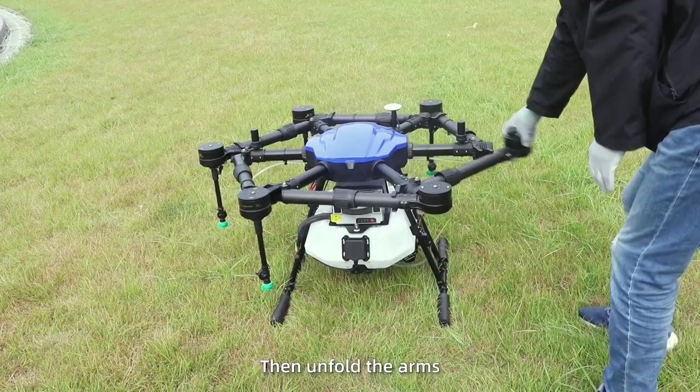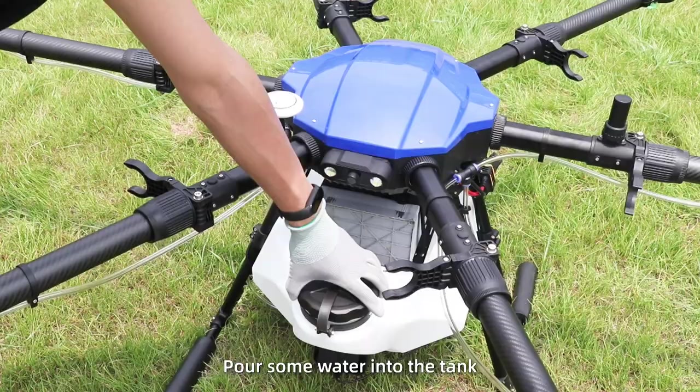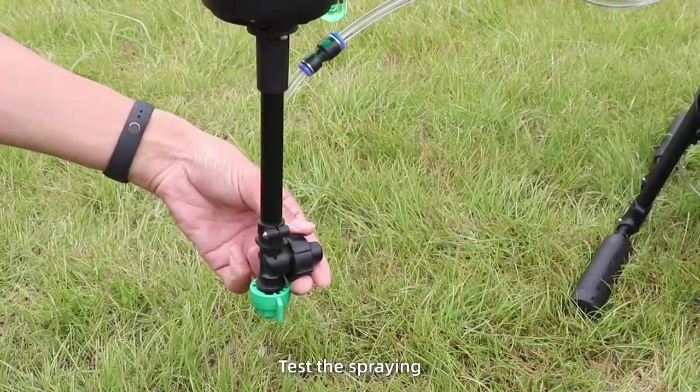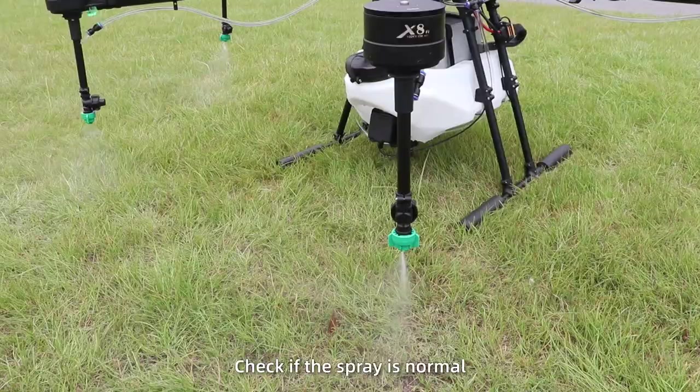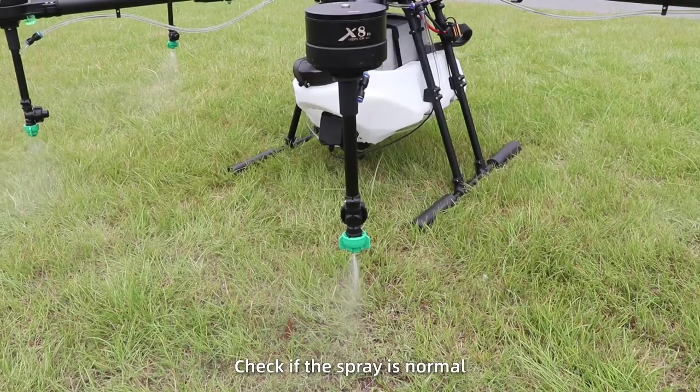Spray debugging. Power off, then unfold the arms. Turn on again. Pour some water into the tank. Test the frame. Empty the air in the nozzle, then tighten it. Check if the spray is normal.